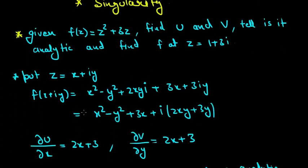This question on Cauchy-Riemann equations gave us a function and told us to find u and v, to find if that function is analytic or not, and to find f at z equal to 1 plus 3i.